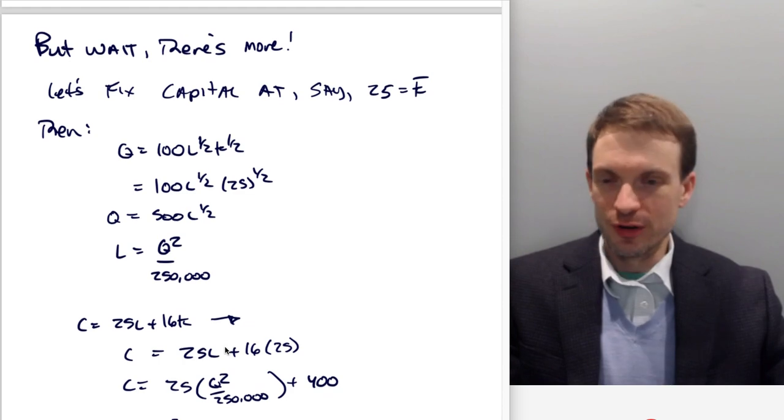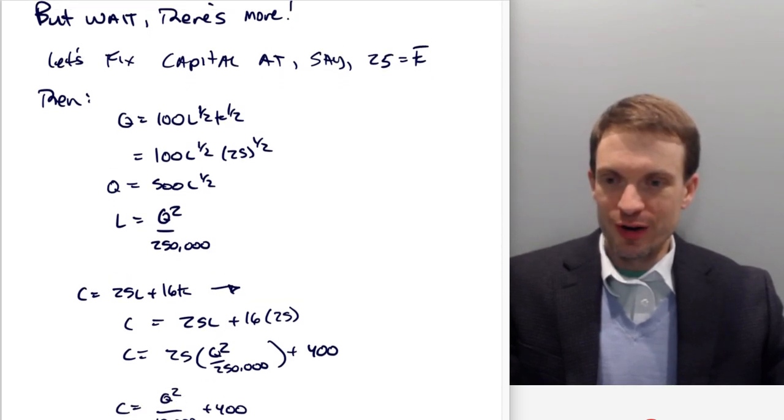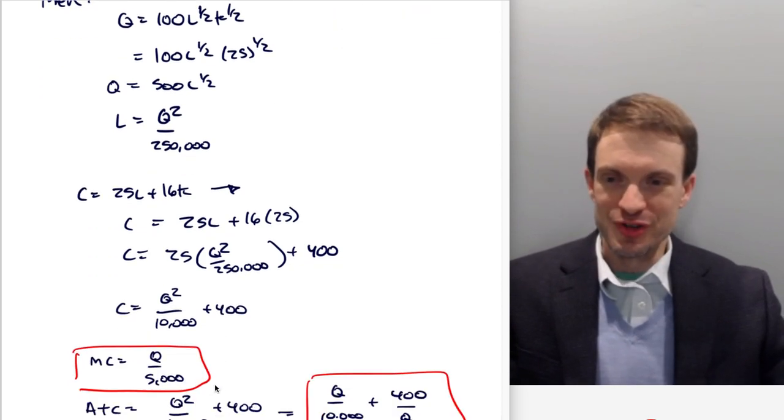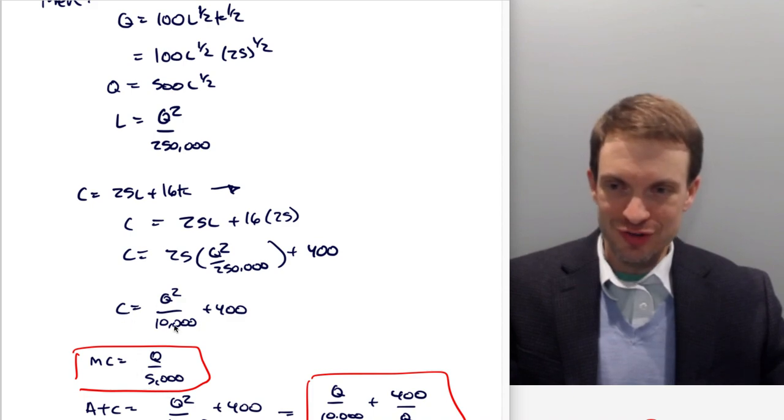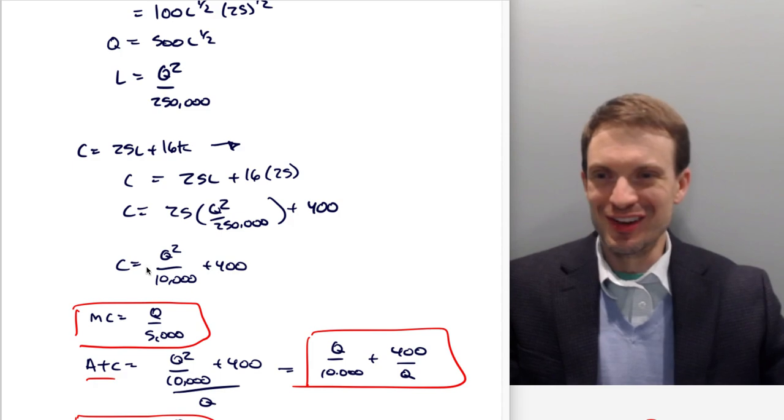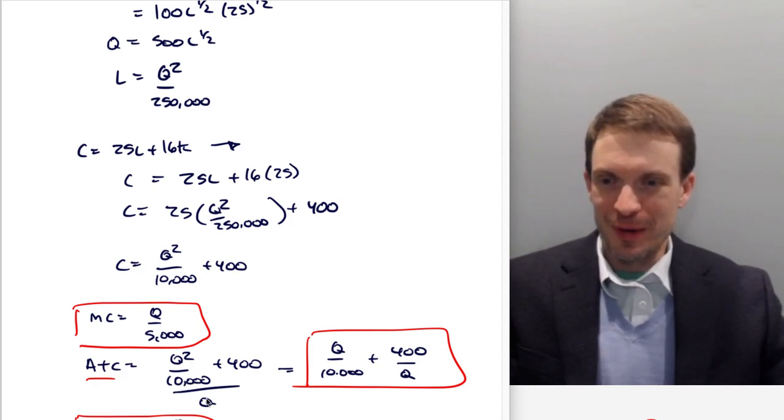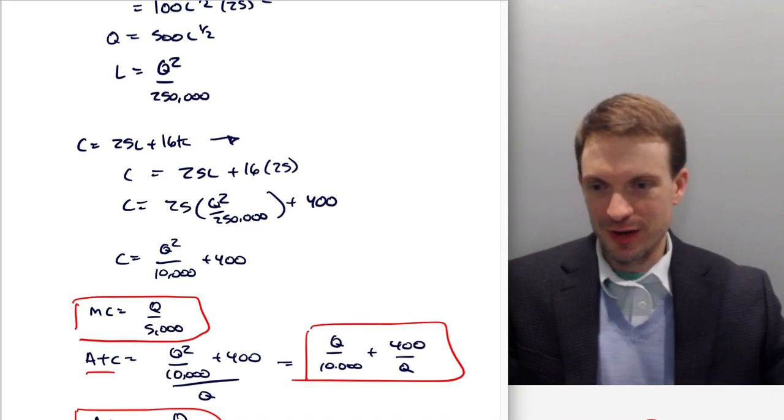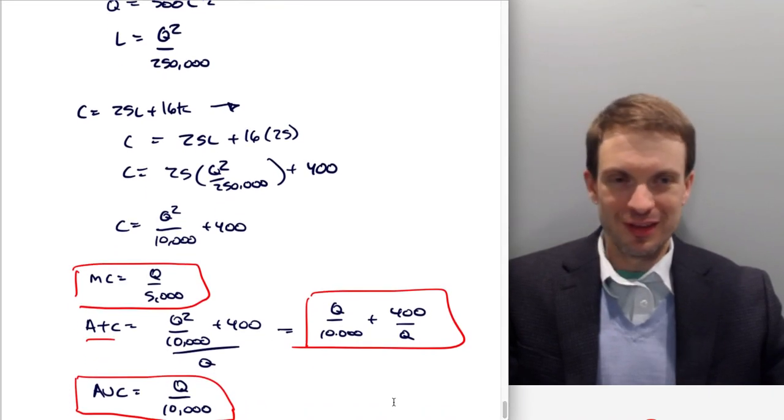Remember our cost function was just 25L plus 16K. That's the cost to produce the amount of output that we're trying to get. So I'm going to drop in our fixed level of capital. That's going to give me my fixed cost. So 25L, 16 times 25, and my fixed cost is 400. And then my variable cost portion, that's going to come from 25 times Q squared over 250,000. So we're going to have Q squared over 10,000 plus 400. It's my cost function.